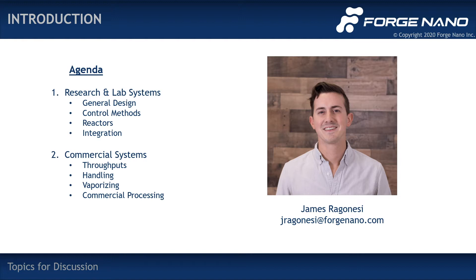For our commercial systems, they tend to get the bulk of our large tolling orders and provide a great means for us to scale up research at Forge Nano. Commercial systems process anywhere from one liter to a thousand liters of substrate per day. I'll discuss obtaining economic throughput, handling bulk materials, vaporization of large quantities of precursor, and the actual commercial processing of those materials.